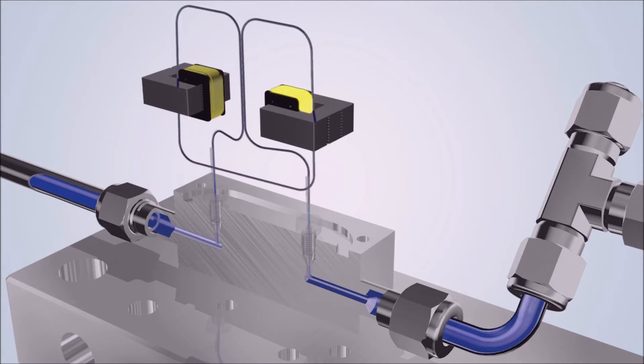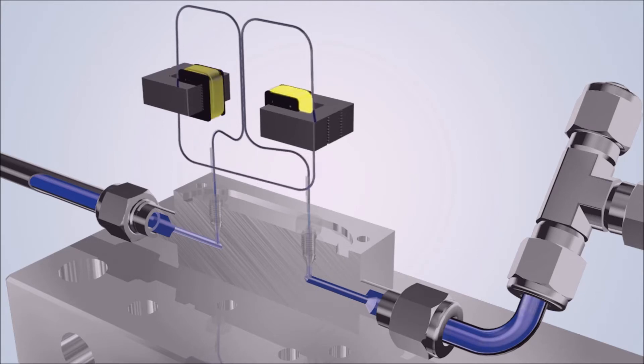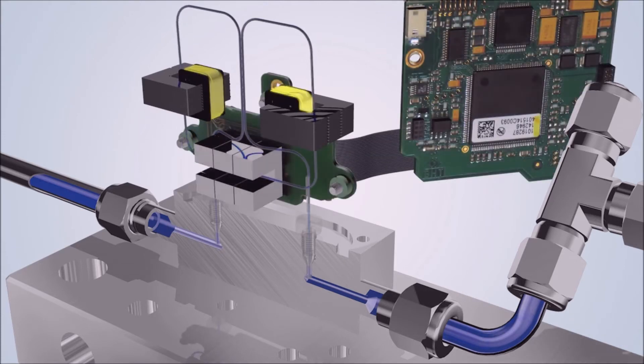All Coriolis instruments are equipped with a sensor tube, which can be used to measure both gases and liquids extremely accurately. The optical sensor precisely measures how much the vibration deviates.